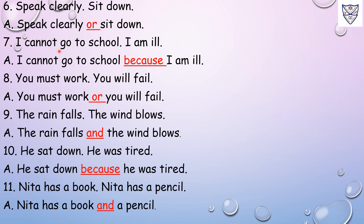Number 7: I cannot go to school. I am ill. Answer: I cannot go to school because I am ill. Here 'because' is a conjunction word and 'I am ill' is the reason. When there is a reason behind the thing, we use the conjunction 'because'.